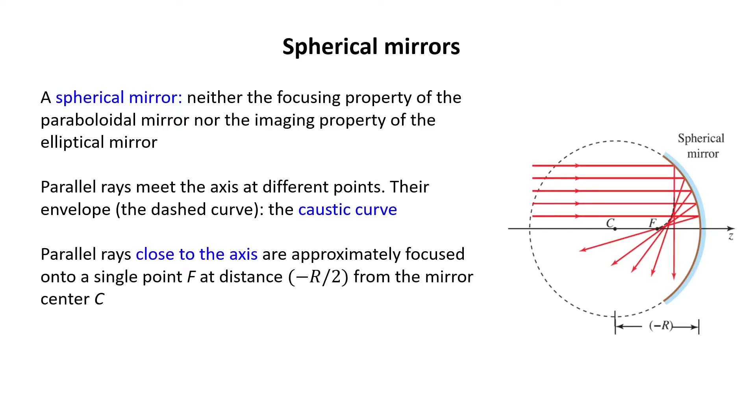However, the parallel rays close to the optical axis are almost focused onto a single point F. Point F is located a distance minus R over 2 from the mirror center.